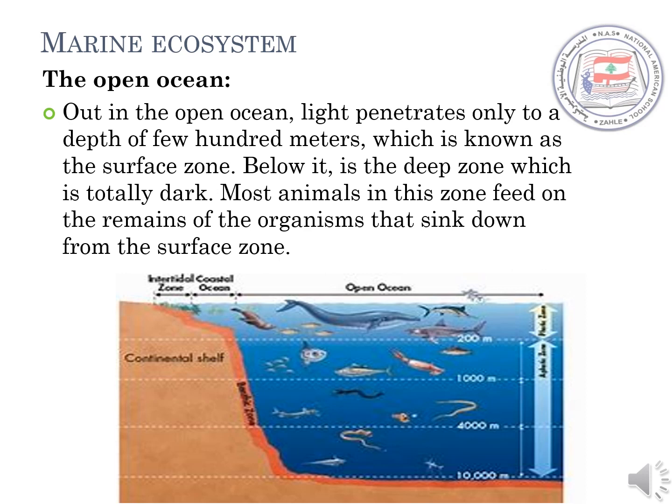This figure shows a model of the aquatic or marine saltwater ecosystem. It shows us the intertidal zone, the neritic zone, the continental shelf, and the open ocean. As you can see, the open ocean is divided into two parts: the first part is the surface zone, which is up to 200 meters, and from 200 meters deep downward is called the deep zone.